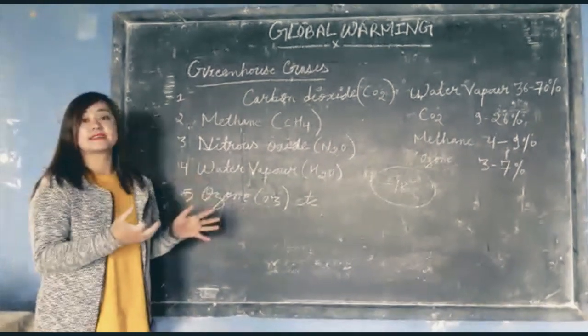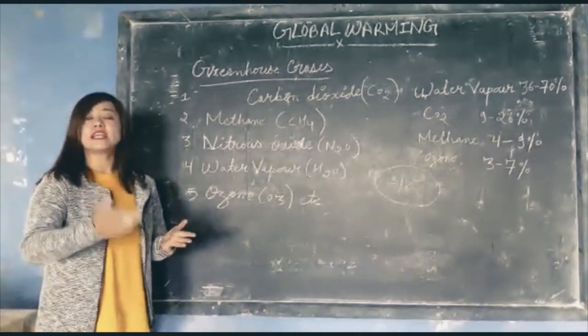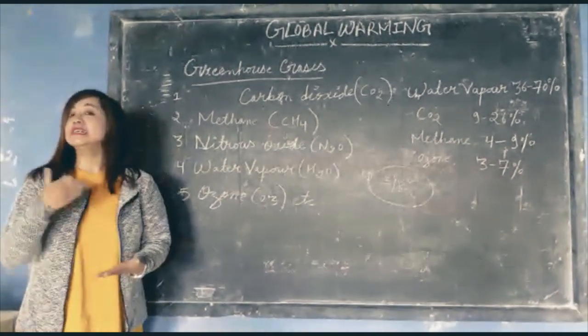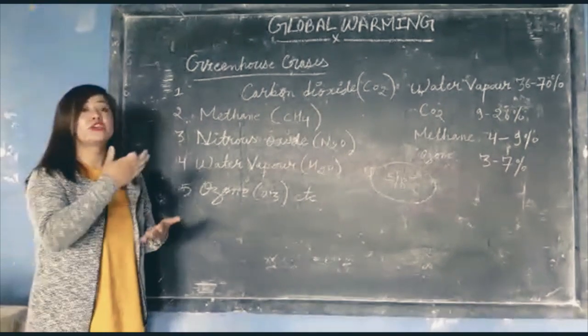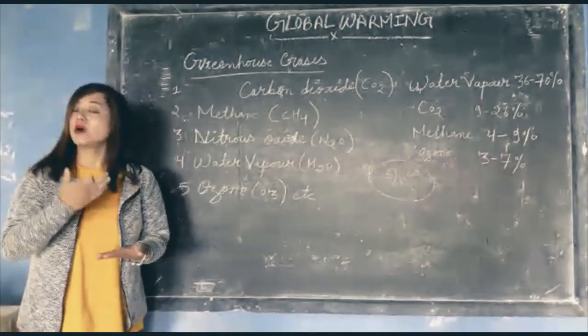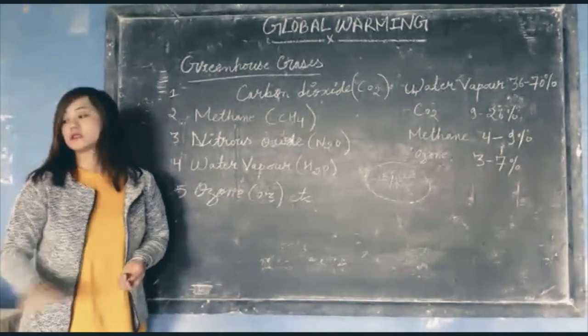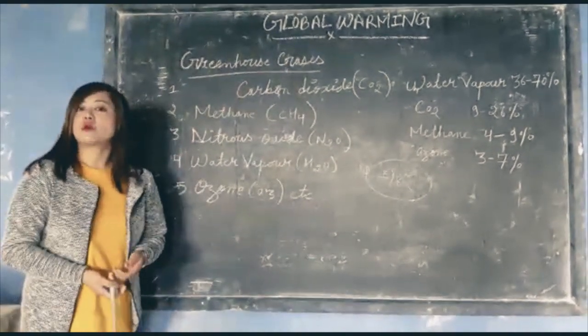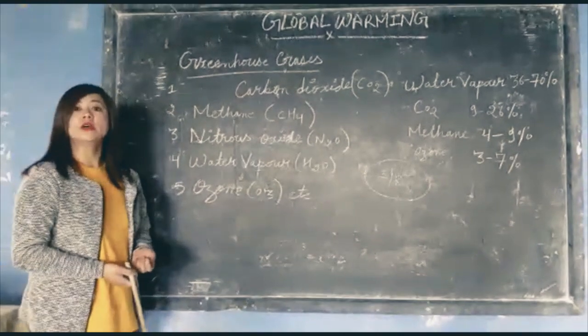These greenhouse gases are trapping more heat from the sun and don't allow that heat to escape or radiate back into space. As a result, the temperature of the earth is rising continuously. This process is known as global warming. Global warming means the rising temperature of the earth.